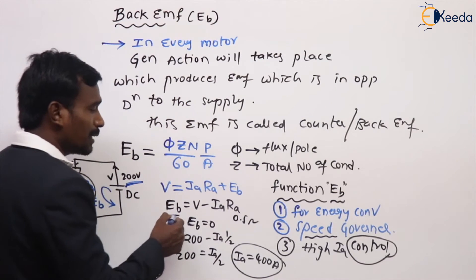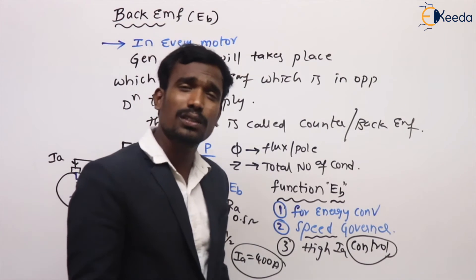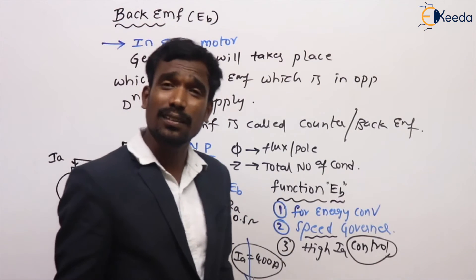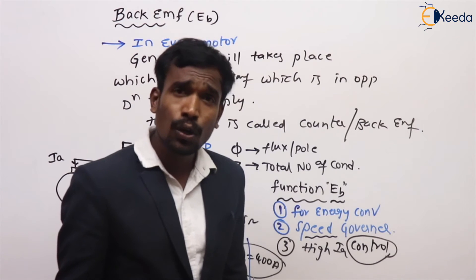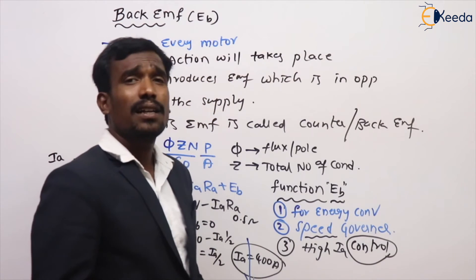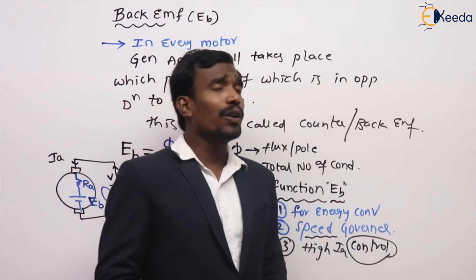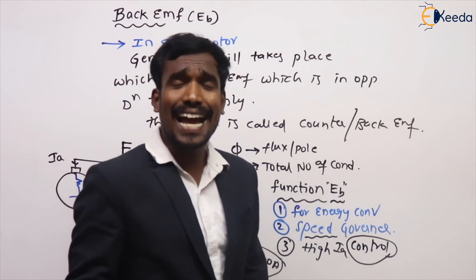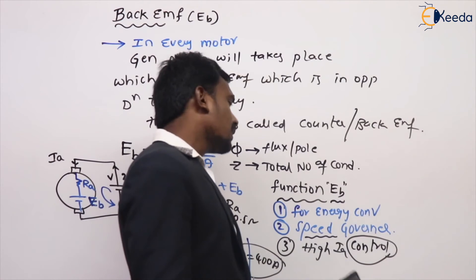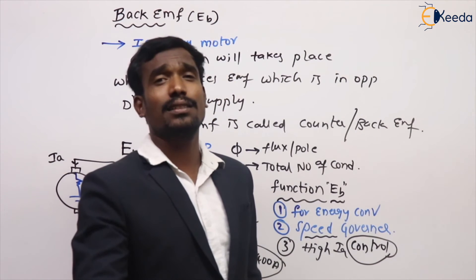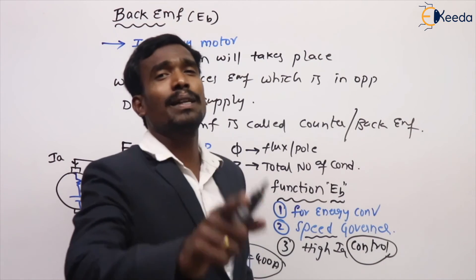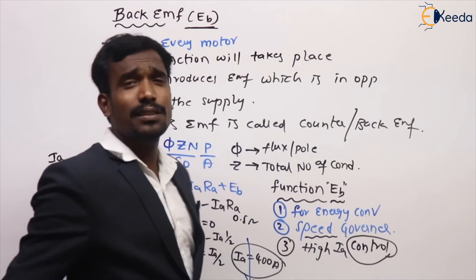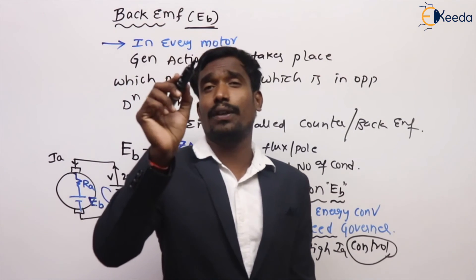If EB is present — for example 100 or 150 volts — then the armature current reduces enormously. So EB is needed for energy conversion; without EB there is no energy conversion. It acts as a speed governor, and it controls high armature currents. This is the concept of EB, which is very important for DC motors.